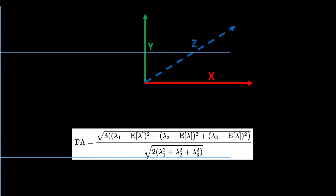How do you get those eigenvectors and values? That's going to be calculated for you by the software package — that's where the heavy lifting comes in. Eigenvector one always corresponds to the principal direction, which doesn't necessarily correspond to the X, Y, or Z axis. It detects the principal diffusion direction, assigns it eigenvector one, and then two and three in descending order of how strong the diffusion is in those directions.